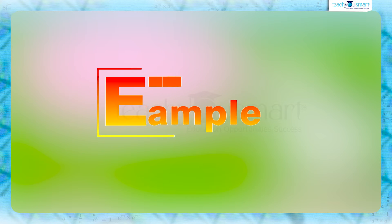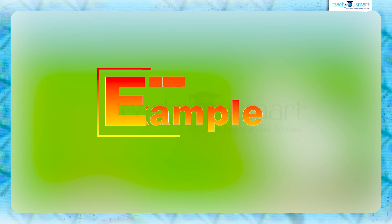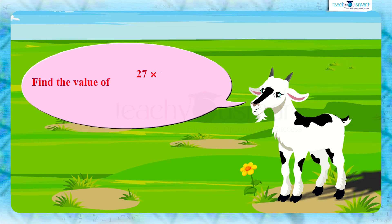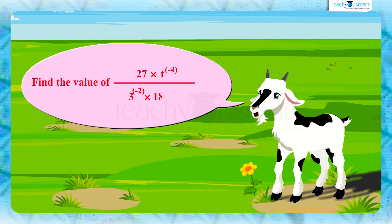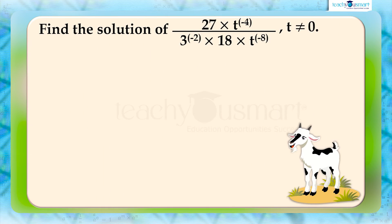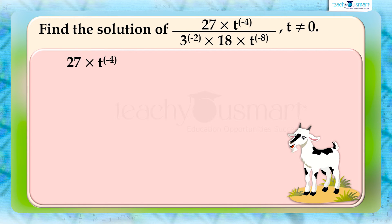Let's do another example. Find the value of 27 multiplied by t raised to minus 4, divided by 3 raised to minus 2 multiplied by 18 multiplied by t raised to minus 8, where t is not equal to 0. The given expression is 27 multiplied by t raised to minus 4, divided by 3 raised to minus 2 multiplied by 18 multiplied by t raised to minus 8.